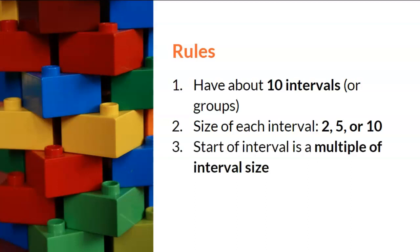Third, the start of each interval must be a multiple of the interval size that you chose in rule number 2. For example, if you selected an interval size of 2, then the start of each group would be 0, 2, 4, and so forth. If you selected an interval size of 5, then the start of each group would be 5, 10, 15, and so forth. Finally, all intervals or groups should be the same size. In other words, once you've selected an interval size of 2 for your table, you cannot switch to an interval size of 5 for the rest of your table.